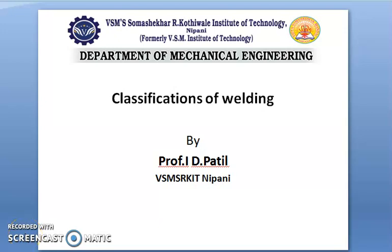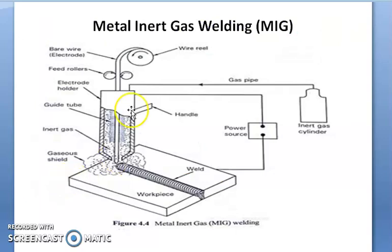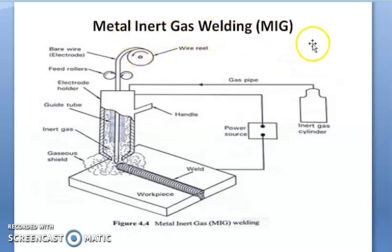Hello everyone. Today I am going to start one more type of the welding process — metal inert gas welding process. This also comes under the arc welding type. In the last video lecture we discussed about tungsten inert gas welding. In this video we will discuss about metal inert gas welding, which is also called gas metal arc welding.